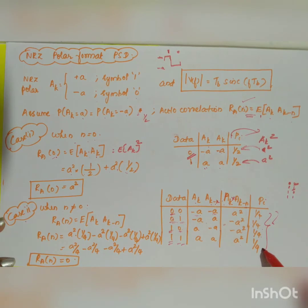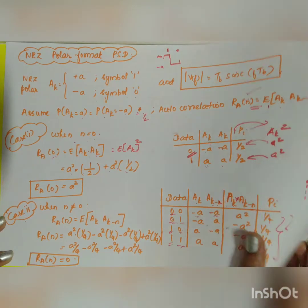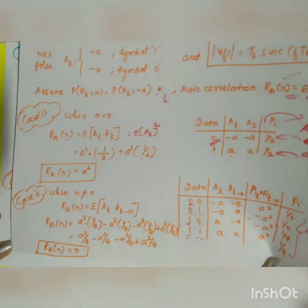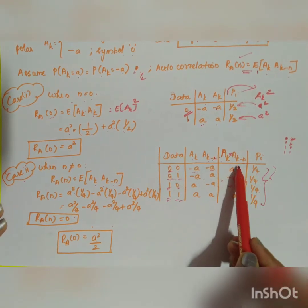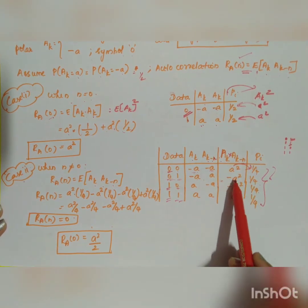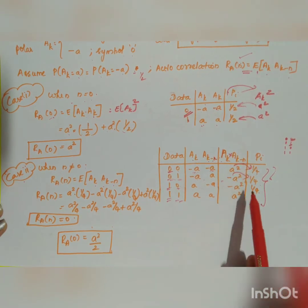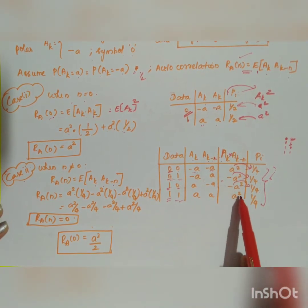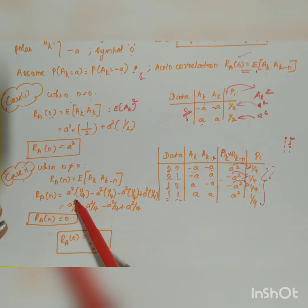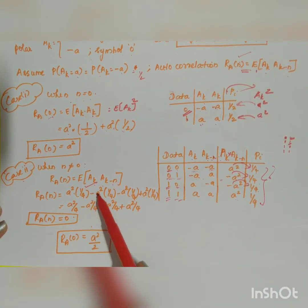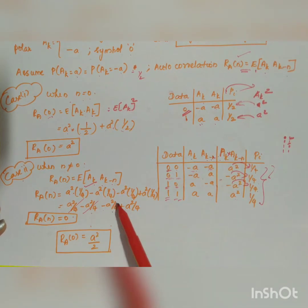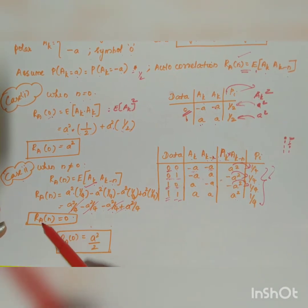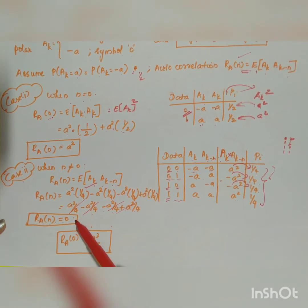Computing the autocorrelation R_a(n) for n ≠ 0: it equals a²×(1/4) + (-a²)×(1/4) + (-a²)×(1/4) + a²×(1/4), which simplifies to a²/4 - a²/4 - a²/4 + a²/4. The positive and negative terms cancel, giving R_a(n) = 0 for n ≠ 0.